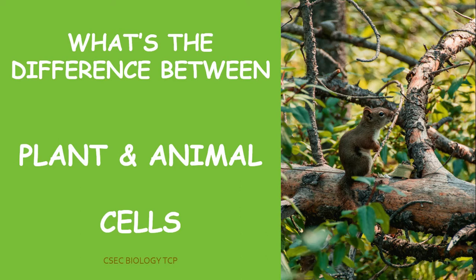It's important to note that a plant cell is the basic unit of all living things. What that means is that all living things would have a cell, and of course while they all have cells, there are some slight differences between the plant and animal cells.